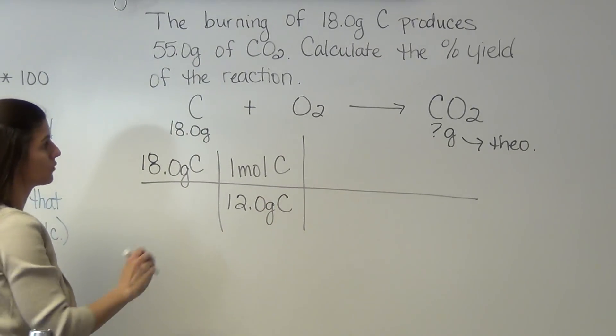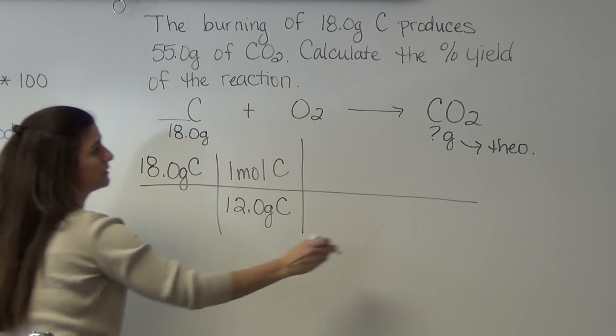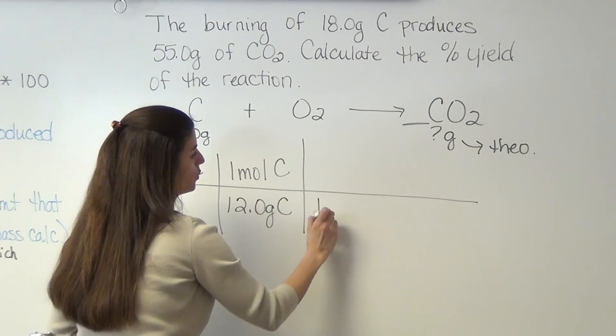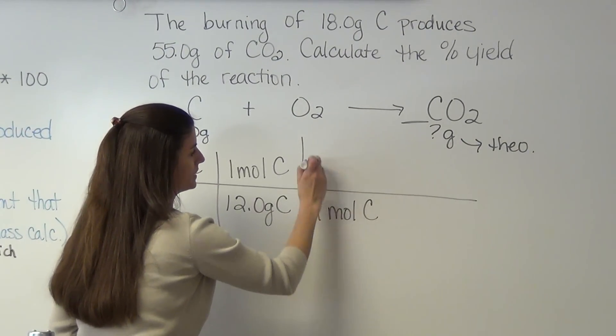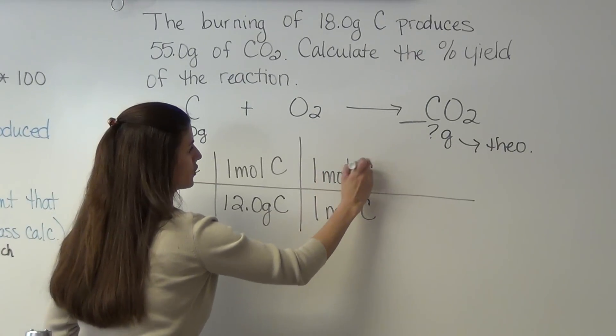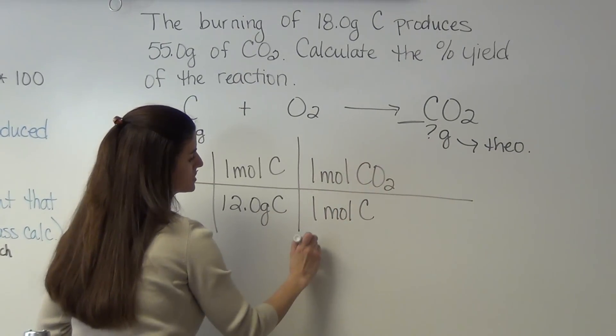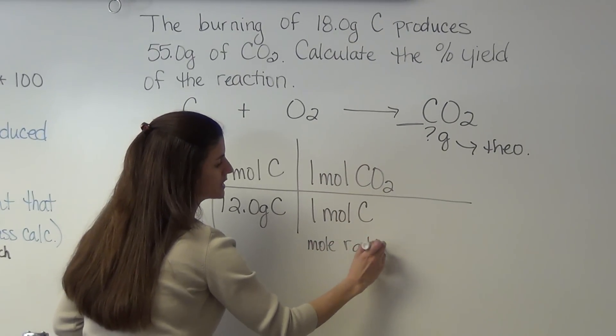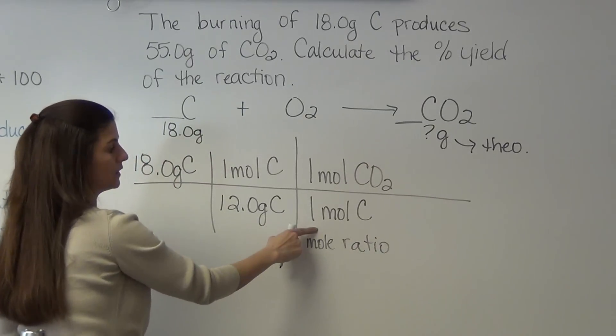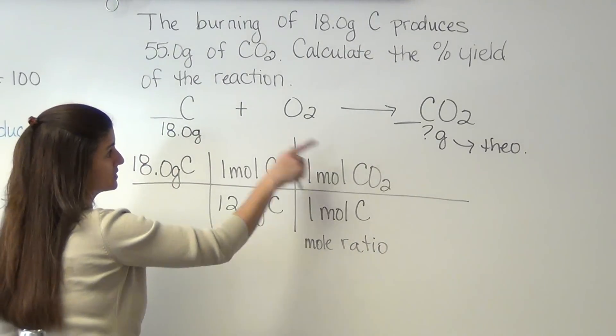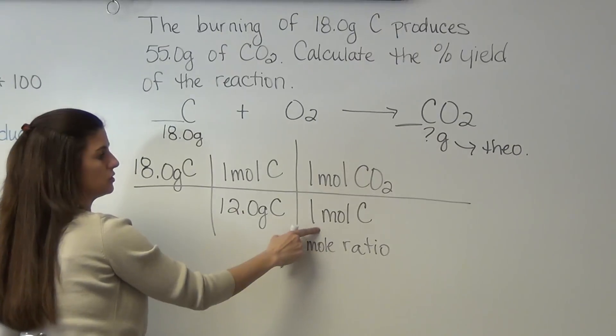Now we're going to do a mole-to-mole ratio from carbon to carbon dioxide. One mole of carbon is one mole of carbon dioxide. Remember, this is our mole ratio. And this is the only time that you can have more than one mole. So if it was a two-to-one, we would have put a two here.